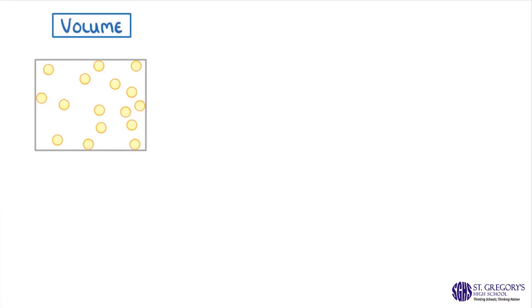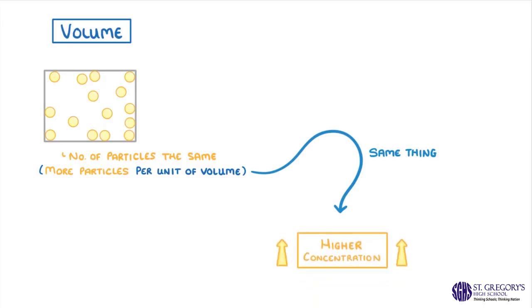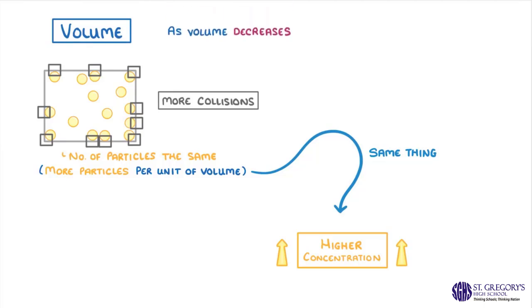Finally, we have volume. If we made our container smaller, but kept the number of particles the same, then there would effectively be more particles per unit of volume, which is actually the same thing as saying there's a higher concentration of particles. As the particles no longer have as far to travel between each collision, there now could be more collisions, meaning a higher pressure. So as volume decreases, pressure increases.